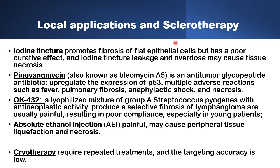Another sclerotherapy agent is OK432, produced from group A Streptococcus pyogenes. It is an antineoplastic medication that produces selective fibrosis and is used in conditions like lymphangioma, but it is usually painful and results in poor compliance, especially in young patients. Sclerotherapy with absolute ethanol injection is also painful and may cause peripheral tissue liquefaction and necrosis. Cryotherapy has also been tried but requires repeated sessions and has low targeting accuracy.